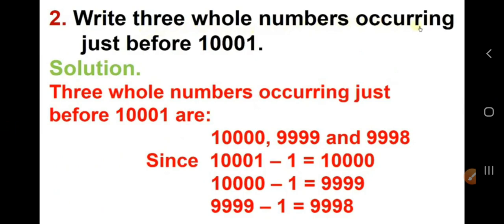Write three whole numbers occurring just before 10001. So, what you should do occurring before is us. So, minus 1 you should do.